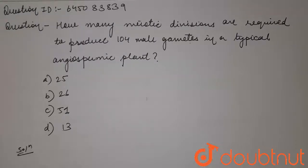How many meiotic divisions are required to produce 104 male gametes in a typical angiospermic plant? Options are: A) 25, B) 26, C) 51, and D) 13.